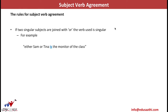Rule 2: if two singular subjects are joined with 'or,' the verb used is singular. For example, 'Either Sam or Tina is the monitor of the class.' Although there are two singular subjects — Sam and Tina — the conjunction 'or' means only one of them is the monitor, so the verb is singular: 'is.' Another example: 'Sam or Bob is going to Delhi.'